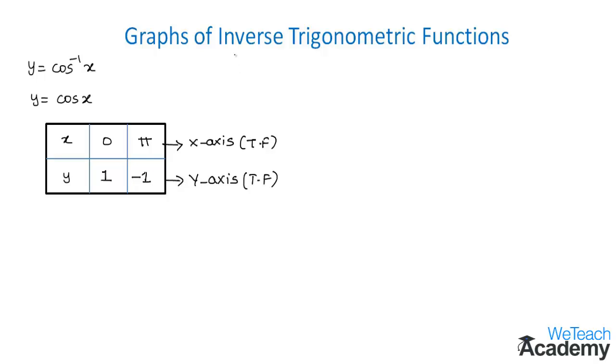For inverse trigonometric functions, we interchange the domain and range. The domain of this function, which are the values of x, becomes the range and is plotted on the y-axis, whereas the values of y become the domain and are plotted on the x-axis.